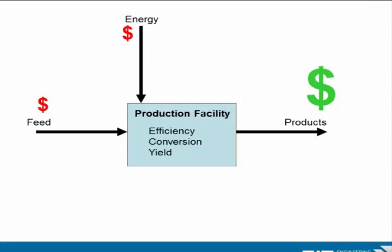Then of course there is the energy input to the system. Tomorrow when we talk about equipment, we'll cover heat exchangers used to heat up streams, fired heaters, etc. Typically your energy comes in as electricity and steam. The process engineer needs to understand the total energy balance on the process, including the utilities used: cooling water, steam, nitrogen, etc.